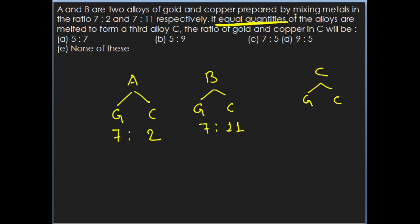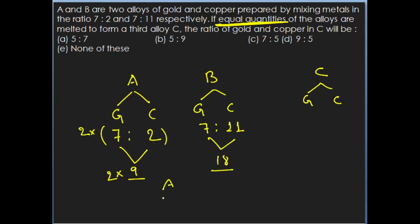In alloy A: gold is 7 units, copper is 2 units, total is 9 units. In alloy B: gold is 7 units, copper is 11 units, total is 18 units. To make the quantities equal, multiply alloy A's ratio by 2 — total becomes 18. So alloy A now has gold 14 and copper 4, while alloy B has gold 7 and copper 11.